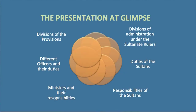We are now at the end of this presentation. We have learned the two divisions of administration — central administration and provincial administration. We have learned the duties and responsibilities of the Sultans. In the provincial administration, we discussed the divisions of the provinces, the different officers and their duties, and the ministers and their responsibilities.